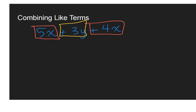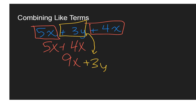So I'm going to start by combining the x's. I have five x plus four x, and that's going to be nine x. Then the positive three y is just going to drop down because I have no other y's to combine it with. So when I simplify the original expression five x plus three y plus four x, that simplifies to nine x plus three y.